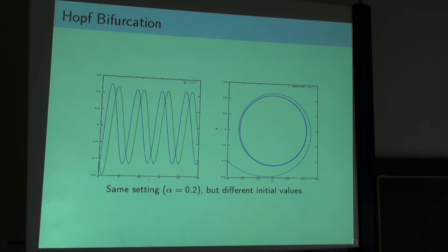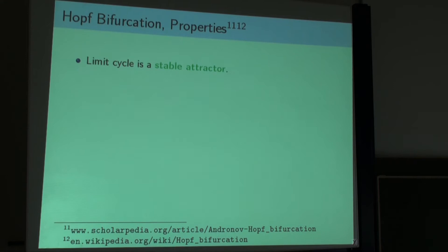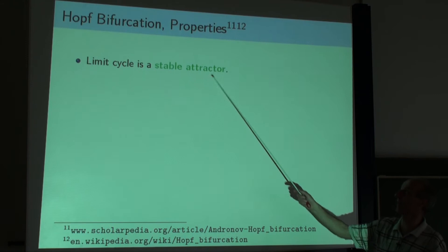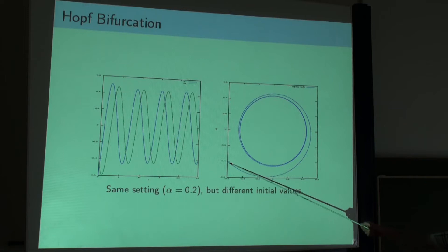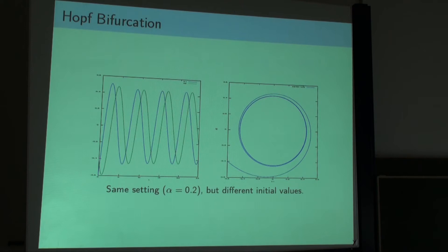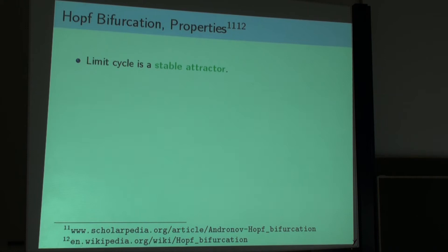This is a new behavior that we do not observe in linear systems. We have such a limit cycle which we also call a stable attractor - it's called an attractor because it attracts the behavior no matter where you start. If you start outside, we end up in this limit cycle. If we start inside, we also end up in this limit cycle. We call it a stable attractor, and in a few minutes we will see an unstable attractor.